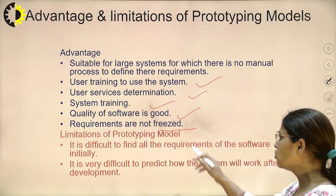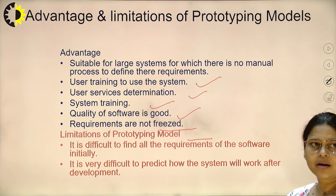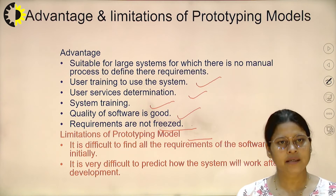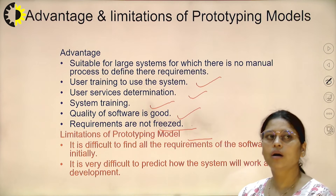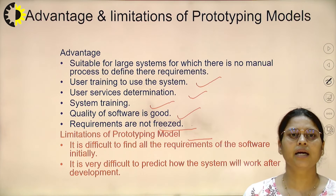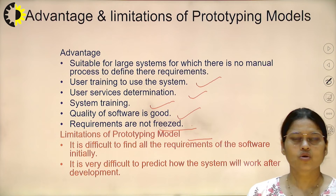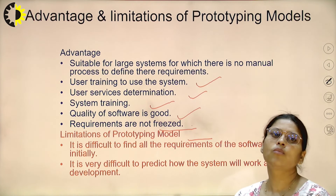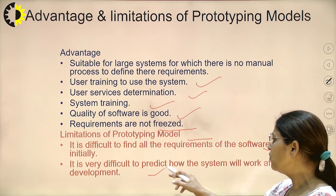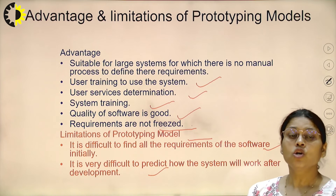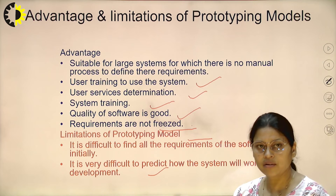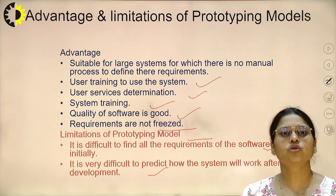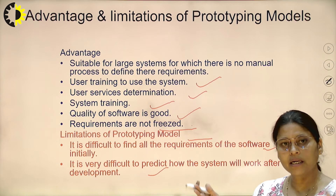There are also limitations of the prototype model. It is very difficult to find all the requirements of the software initially, because it is human nature that no one can give complete requirements at a very initial phase. This is also very difficult for real-time projects where requirements change continuously. Additionally, it is very difficult to predict how the system will work after development, since the prototype is just a dummy model of the software and the actual system may not work exactly as shown by the quick design.